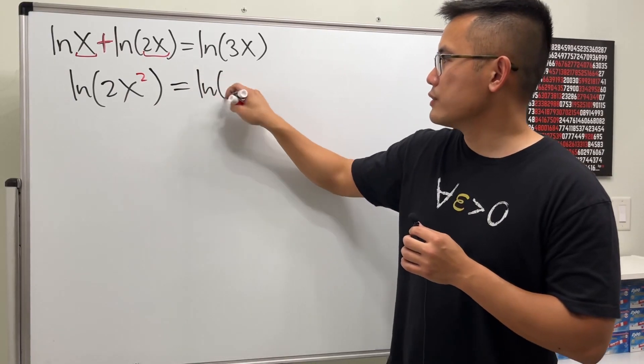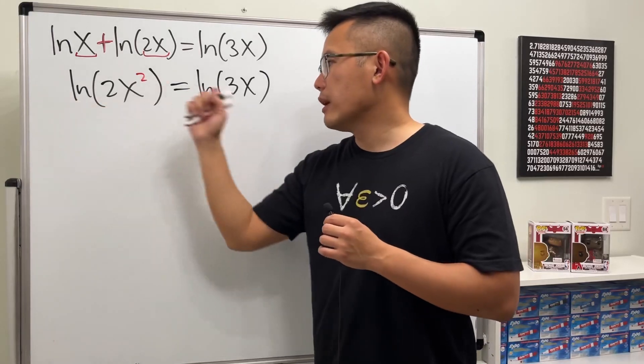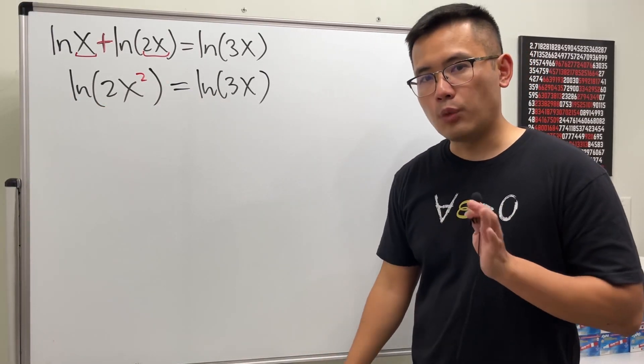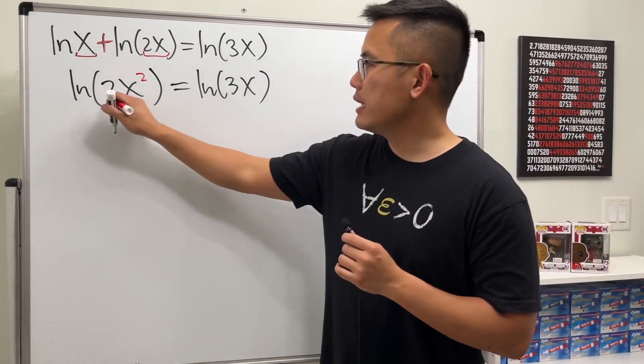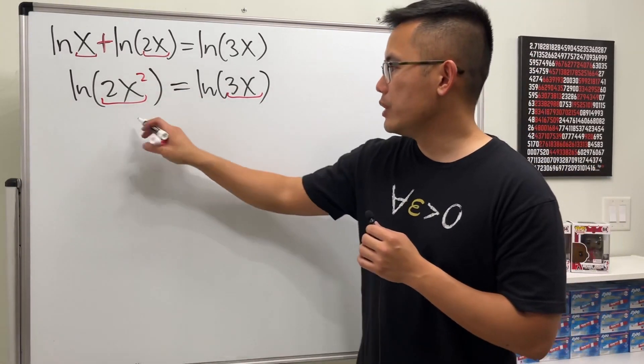And the right-hand side is ln(3x). Guess what—when we have ln on both sides, because ln is a one-to-one function, that means the inside has to be equal. This has to be equal to that. So we know...